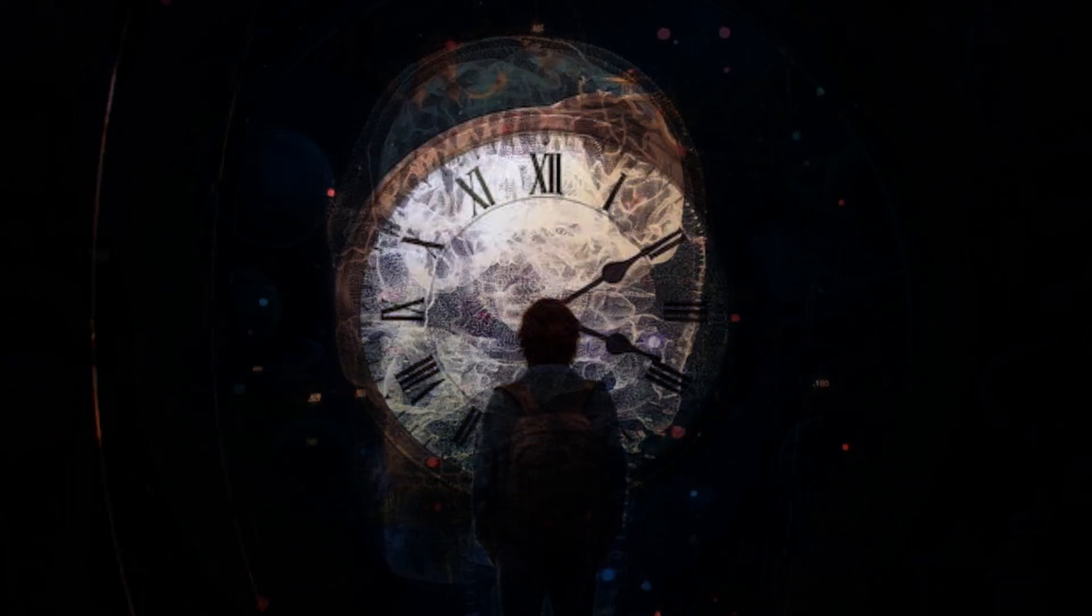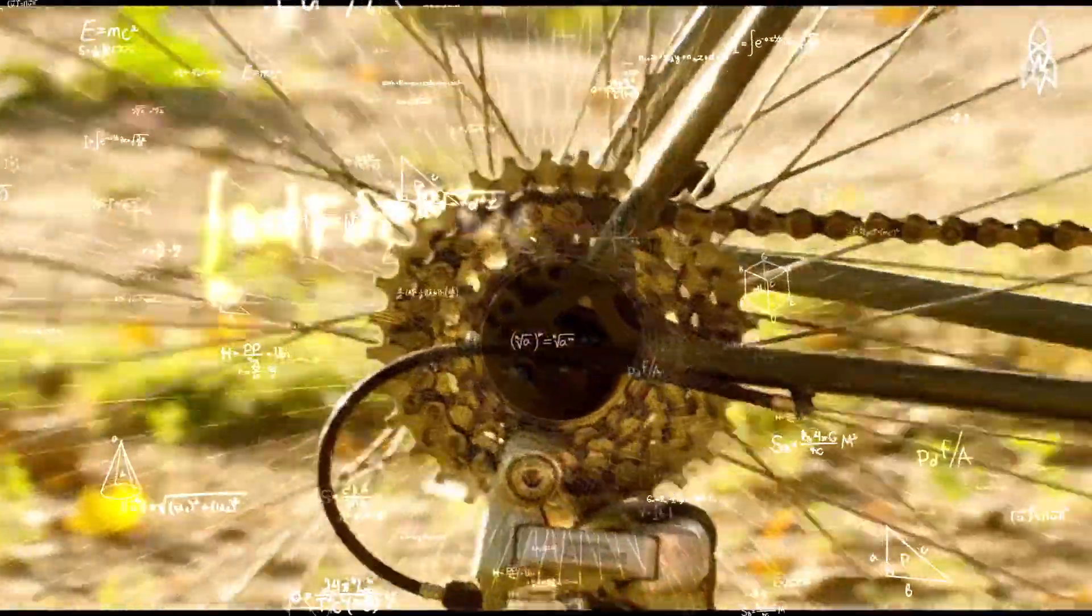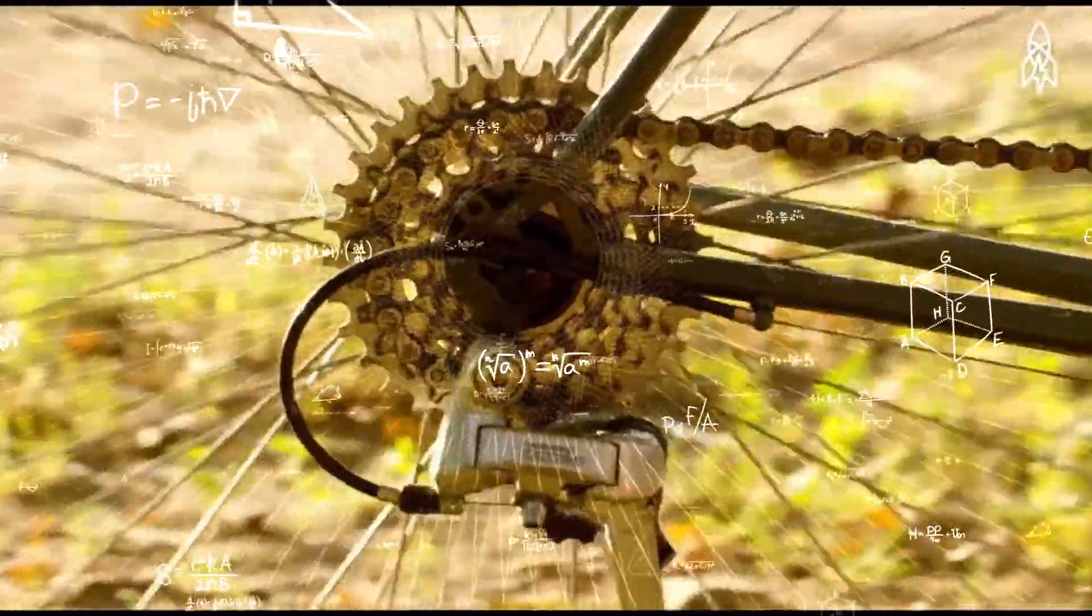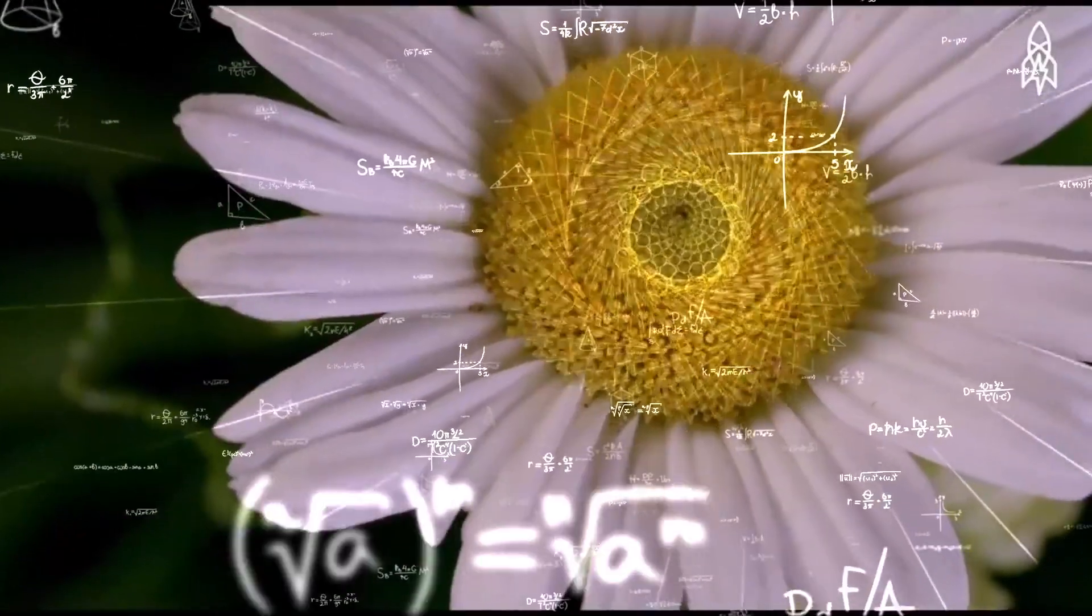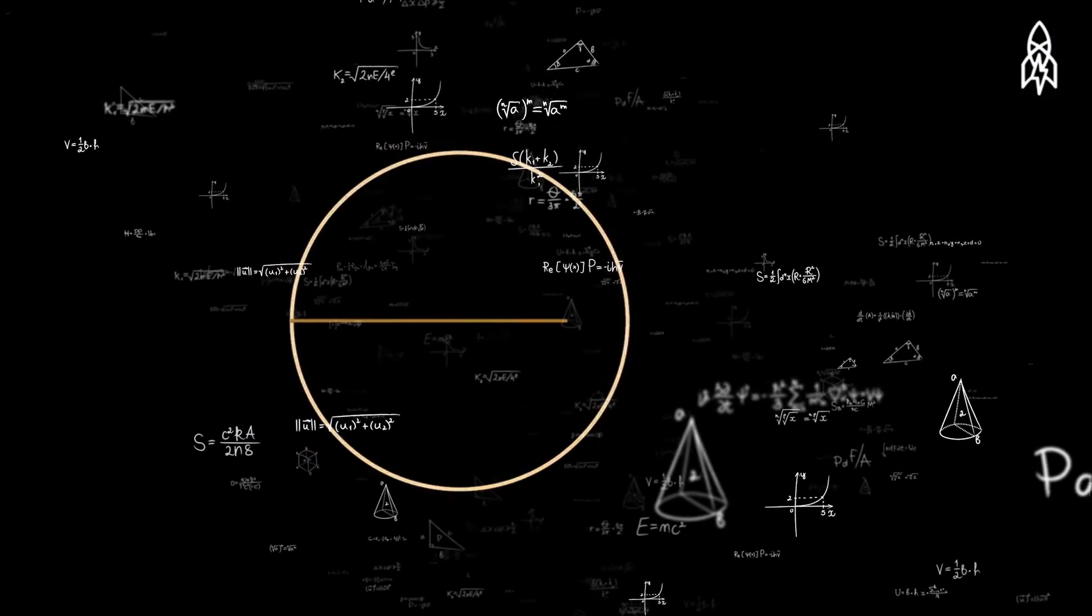Padgett began to see numbers and mathematical concepts everywhere. He could visualize complex mathematical objects in his mind's eye, and he developed an extraordinary ability to solve math problems. He also began to draw intricate fractal patterns by hand.